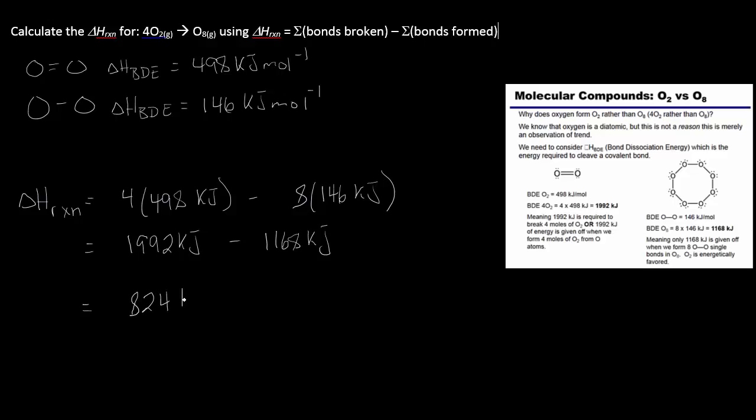So handling the subtraction here, this would be 824 kilojoules. Now this means delta H is positive.